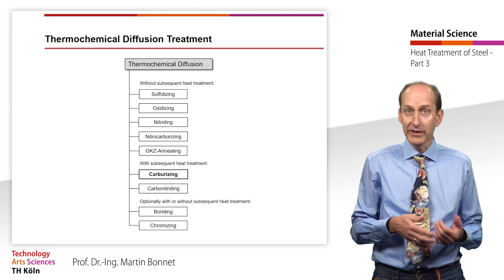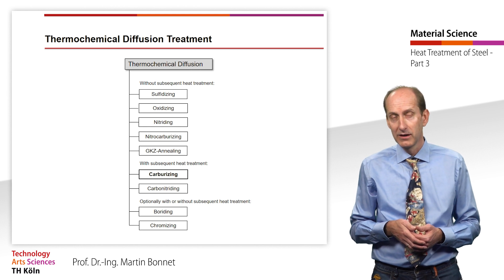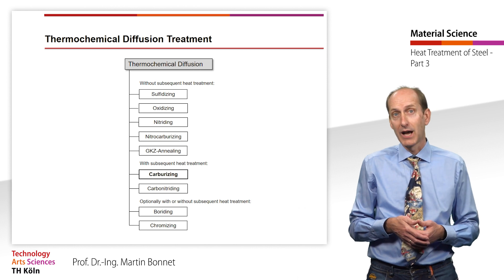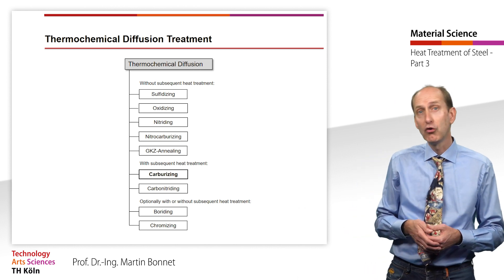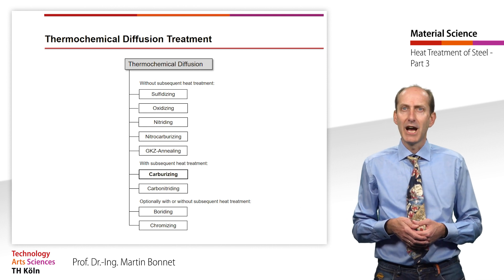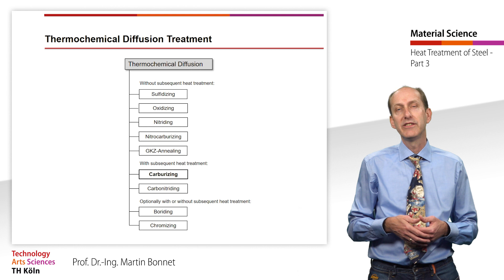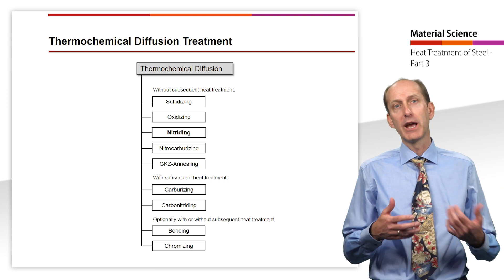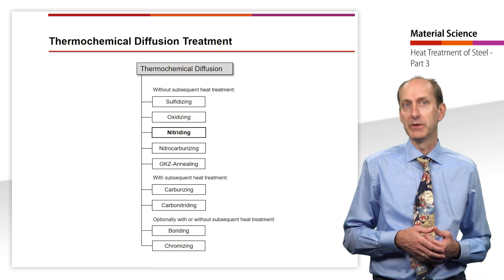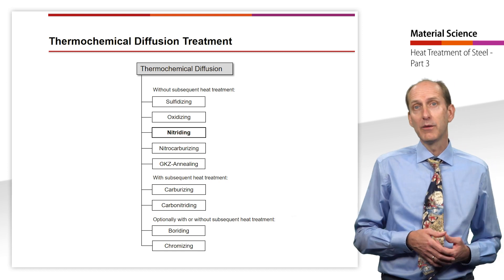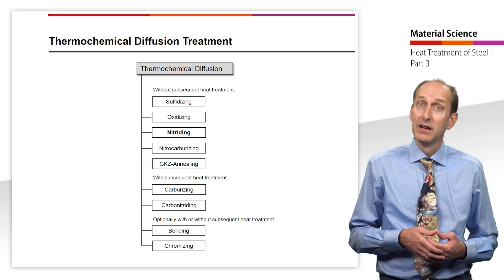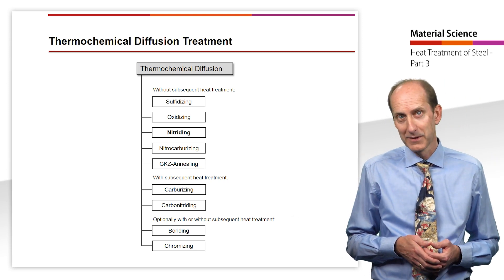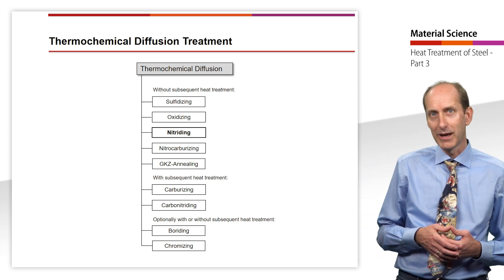The processes for surface hardening with thermochemical diffusion treatment are divided into processes without and with subsequent heat treatment. The processes with subsequent heat treatment include carburizing, carbonitriding, boronizing, and chromizing. Here, I would like to use an example of the process of case hardening by carburizing. The processes without subsequent heat treatment include sulfidizing, oxidizing, nitriding, nitrocarburizing, and GKZ-annealing. I would like to use nitriding as an example of these processes.